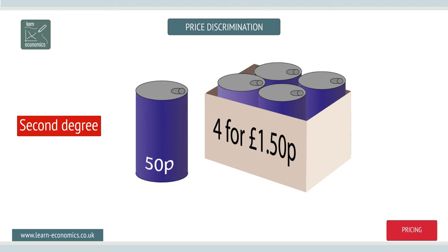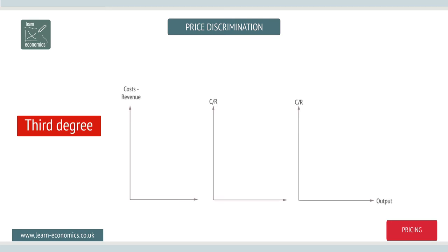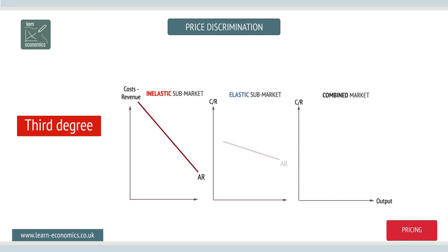Third degree discrimination is the most common type and occurs when different sub-markets can be identified. Once identified, each sub-market must have a different PED. When PED is low and inelastic, the profit maximizing price is high, but when PED is high and elastic, the profit maximizing price is much lower.